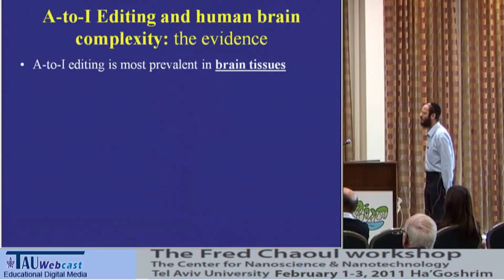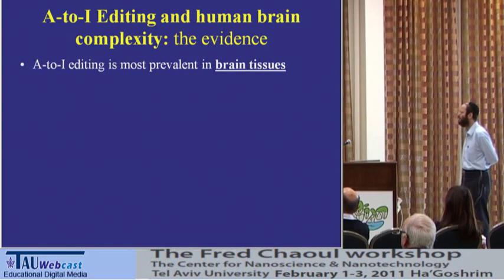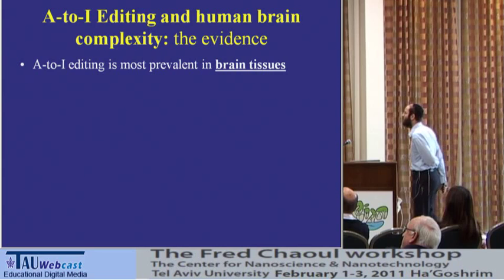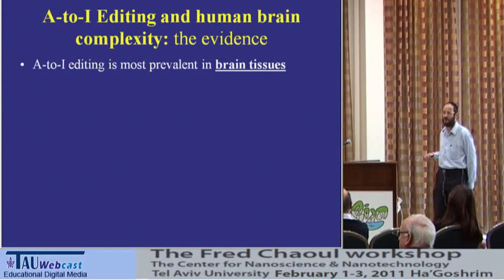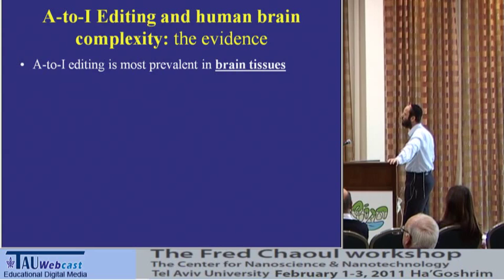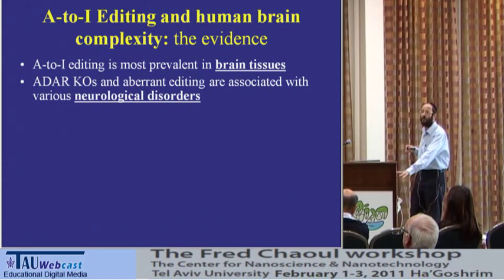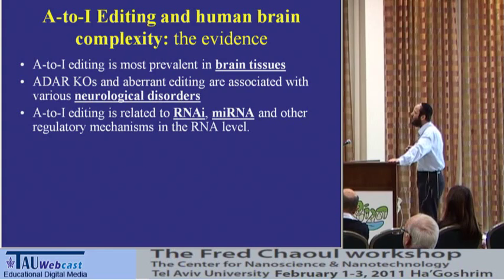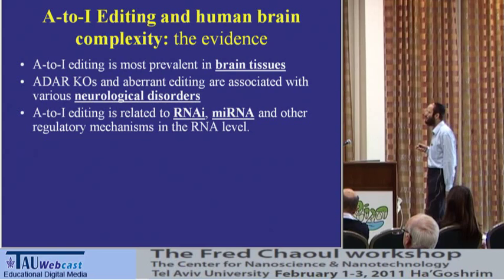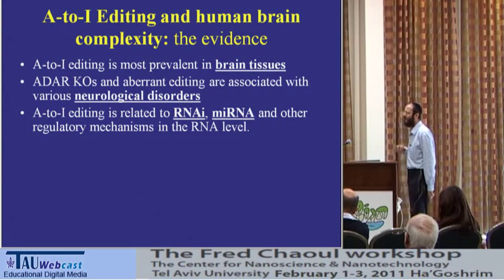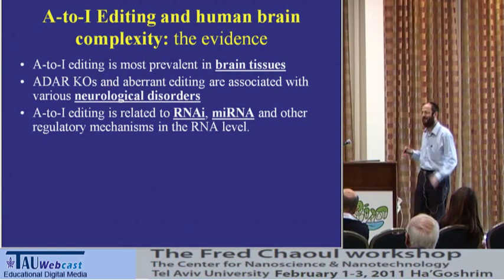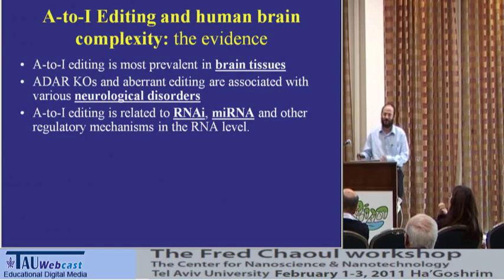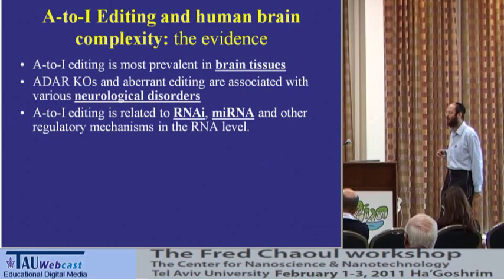Let me end with some speculation. Here is the evidence connecting A-to-I editing to brain complexity. First, A-to-I editing is most prevalent in the brain — certainly true in humans. Aberrant editing and editing knockouts are strongly connected to neurological disorders. A-to-I editing is also known to relate to RNAi and microRNAs — processes that control RNAs in different ways and add to the complexity of the transcription-to-translation step. In contrast to the central dogma where RNA is just a messenger, we now know there are many complex regulatory processes at the RNA level, and many of them connect to A-to-I editing.